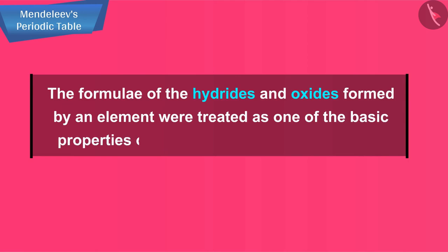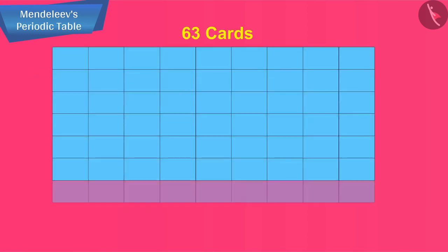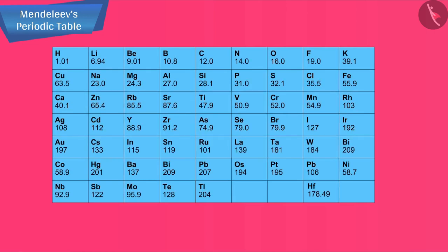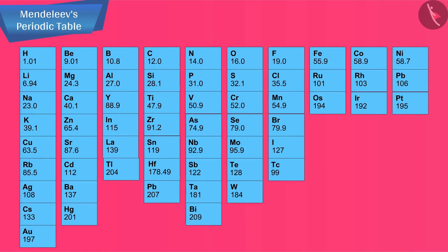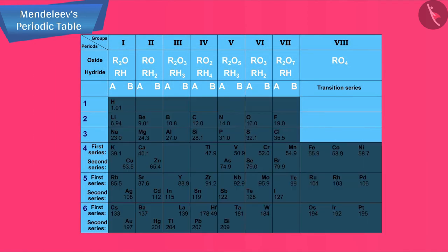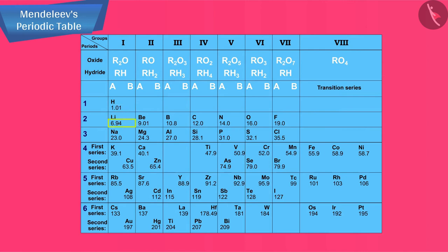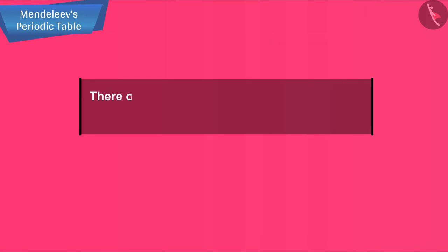He then took 63 cards and on each card he wrote down the properties of one element. He sorted out the elements with similar properties and pinned the cards together on a wall. He observed that most of the elements got a place in a periodic table and were arranged in the order of their increasing atomic masses. It was also observed that there occurs a periodic recurrence of elements with similar physical and chemical properties.